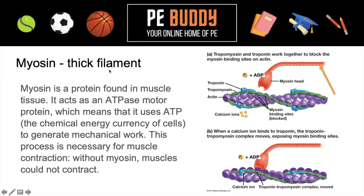Myosin — these are our thick filaments, and again there's our protein found in the muscle tissue. They act as ATPase, which means they use ATP. ATP is the chemical energy currency of the cells. And this generates the mechanical work, or movement or contraction of the muscle. In this diagram, you can just see the myosin head, which is connected to the larger, thicker myosin body.